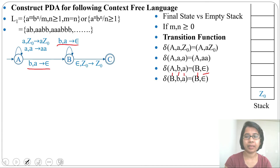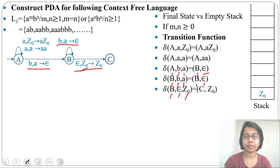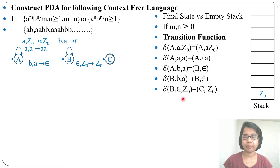Next: δ(b, b, a) = (b, ε) — state 'b', input 'b', topmost 'a', stay in state 'b' and pop 'a'. Finally: δ(b, ε, Z0) = (c, Z0) — state 'b', epsilon input, topmost Z0, go to state 'c'. For designing a PDA, first think about how you will operate the stack: for which input symbol will you push, and for which will you pop.